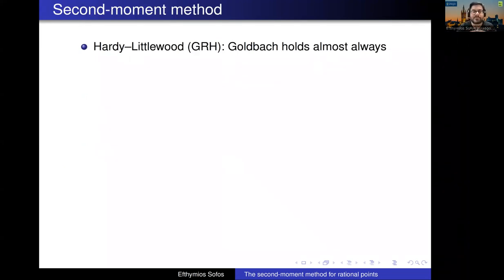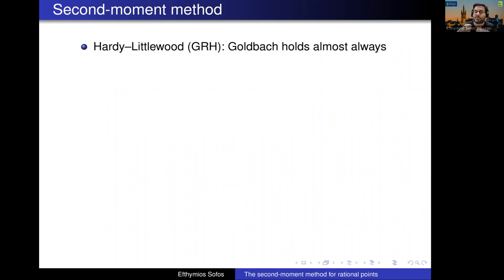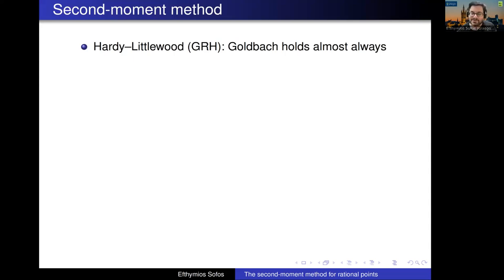What is the second moment? For the Hasse principle, the first example I could find is from the 1920s: Hardy and Littlewood used the GRH to show that the Goldbach conjecture holds for 100% of even numbers. They proved that if you look at a random even number between 1 and x, then with 100% probability it is a sum of two primes. In my mind, this is a Hasse principle question, although you can argue about this.